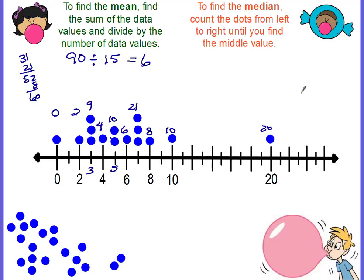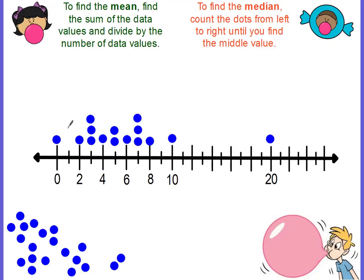You can also find the median. To find the median, just count the dots from left to right until you find the middle value. One way to do this is to cross them off — low, high, low, high — alternating from each end. And you're left with this dot right here, which is at five. So the median would be five.